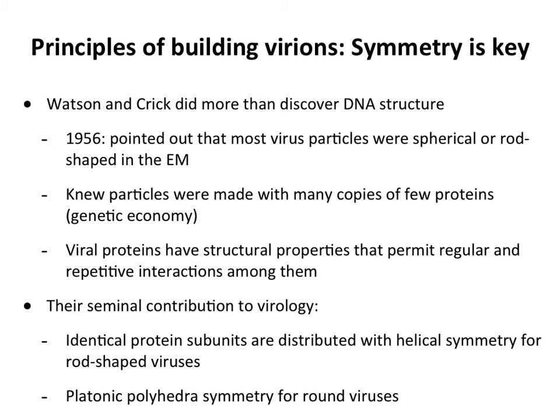For example, poliovirus is a spherical particle, and tobacco mosaic virus is rod-shaped. Of all the EM images of viruses done at that time, they fell into those two categories. They also knew from biochemical studies — purifying a virus, breaking it up, and running it on a protein gel — that viruses are made with many copies of a few proteins. Poliovirus, for instance, has four proteins repeated many times to form the particle.